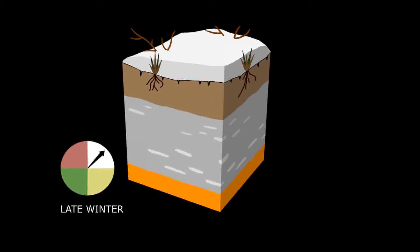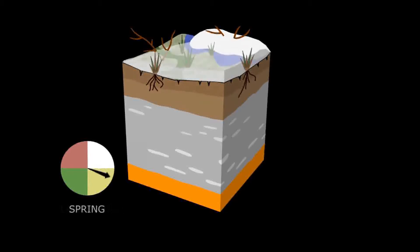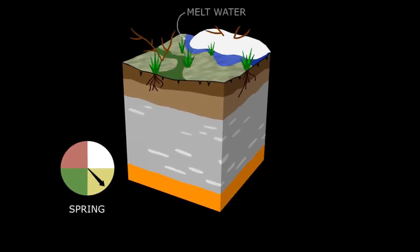In a stable climate, the seasonal cycle of active layer freezing and thawing continues for decades or even hundreds of years.